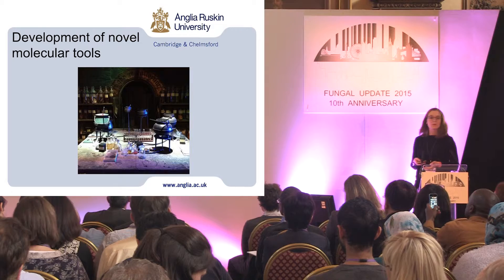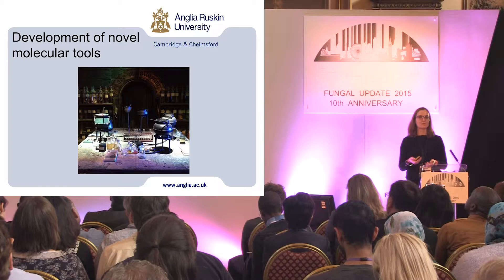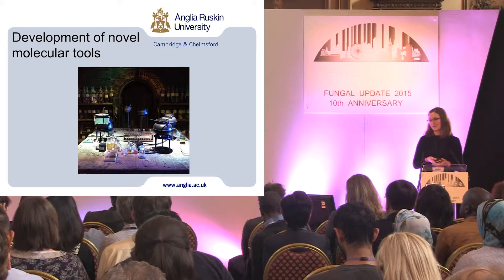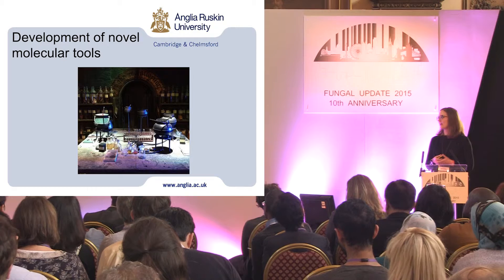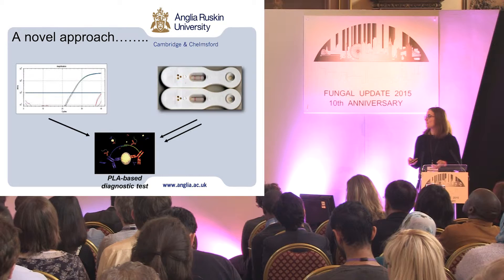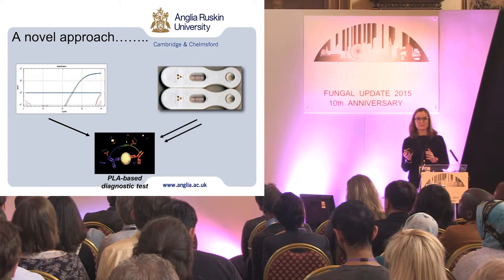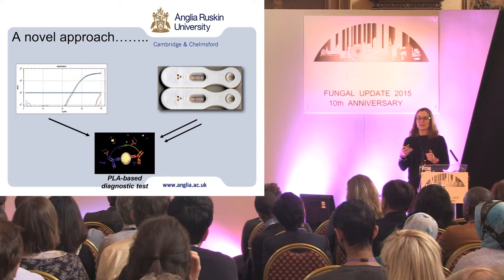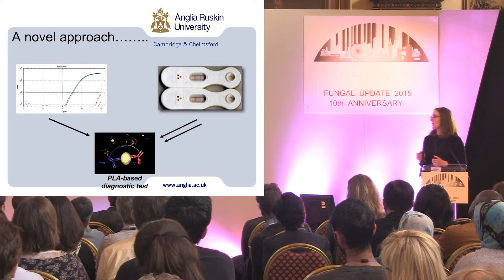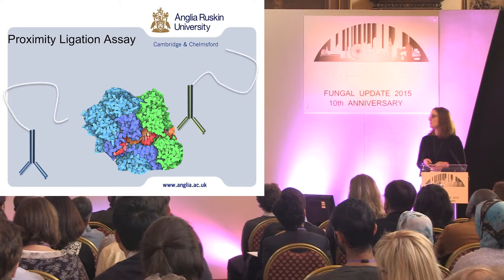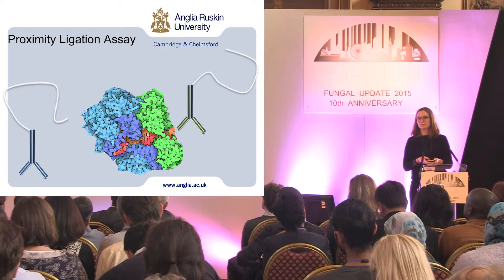What else can we do? We could develop novel molecular tools, and that's what we've been looking at at Anglia Ruskin University. What we wanted to do was take the specificity of antibody detection — specifically antibody targeted to an antigen that is actively released during active growth of aspergillus as a marker of active growth — and combine it with the exquisite sensitivity of real-time PCR.